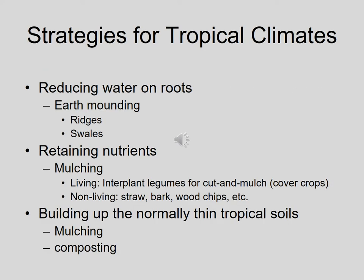In tropical climates we have a lot of water, humidity, and sunshine, so the challenge is to reduce water on the roots. This is done through earth mounding, ridges, and swales — where you mound the soil above the normal level to plant crops so their roots are in well-drained soil. Water drains away from those mounds instead of sitting on roots, because in tropical areas water pooling in a depression will rot the roots.